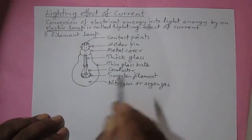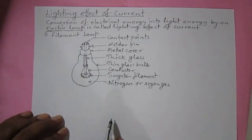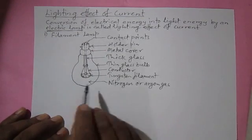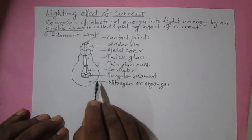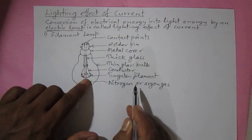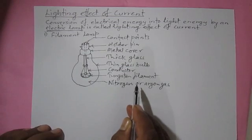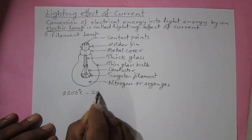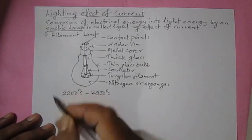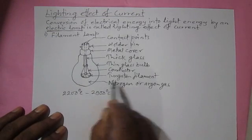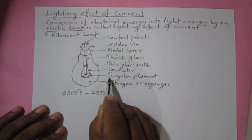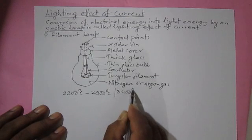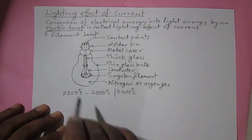The tungsten filament is the major element of the filament lamp. When current enters it, its resistance is very high, so it obstructs the flow of current a lot and becomes white hot. It converts electrical energy into light energy, reaching a temperature of 2200°C to 2900°C. Many metals melt at this temperature, but tungsten has a very high melting point of about 3400°C, so it is selected — even after becoming white hot, it doesn't melt.